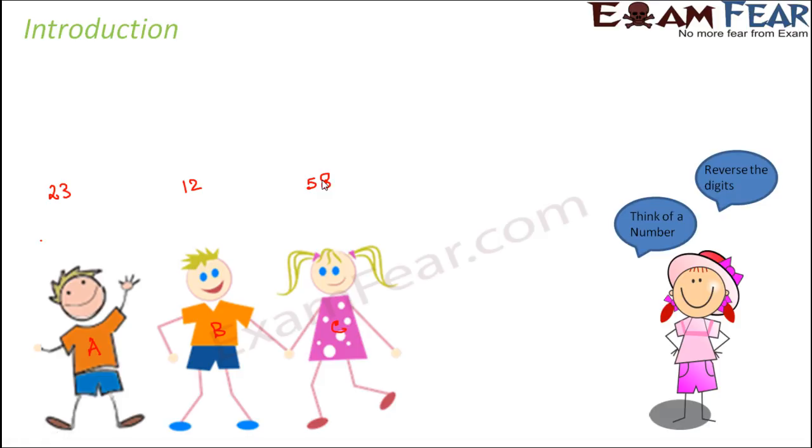The teacher asked them to reverse the digits of that number. In this case, 2 and 3 are the digits which make the number 23. The moment you reverse the digits, it becomes 32. Here, when you reverse the digit, it becomes 21. And here, when you reverse the digit, it becomes 85.